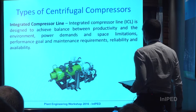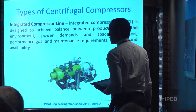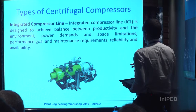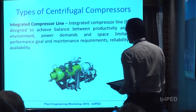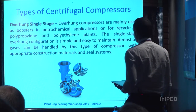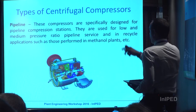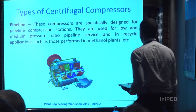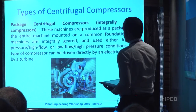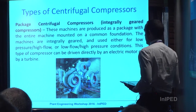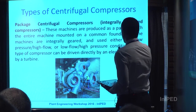This is the integrated compressor line, designed to achieve a balance between productivity and environment with power demand and space limitations. This is the overhang single stage compressor, mainly used for boosters in petrochemical applications. The pipeline compressor is specifically designed for pipeline compression stations. And finally, the integrated compressor is used for low pressure and high flow, or low flow and high pressure conditions.